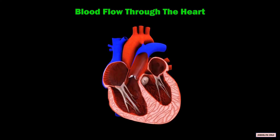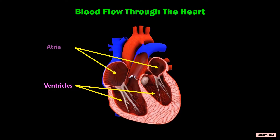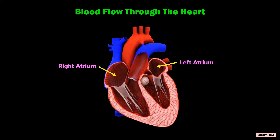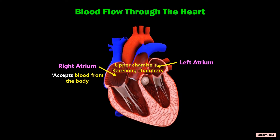The human heart has four chambers, which are the two ventricles and two atria. Atria is the plural form of atrium. The right and left atrium, which are the upper chambers, are the receiving chambers of the heart. The right atrium accepts blood from the body, while the left atrium accepts blood from the lungs.